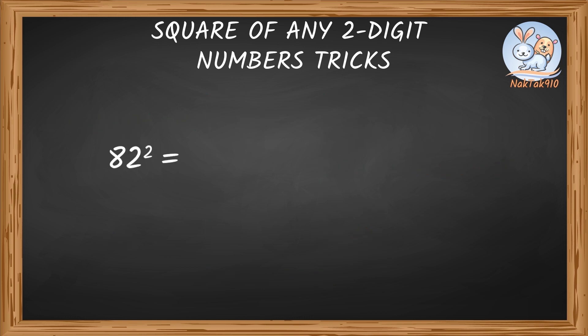82 square. 8 square is 64. 2 square is 4. Because it's one digit, let's put a 0 in front of it. So it's 04. Let's put a 0. And 8 times 2 is 16. And times 2 is 32. Add them. It's 6,724.